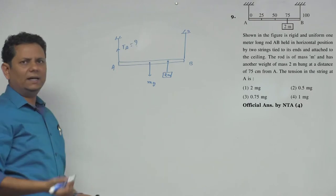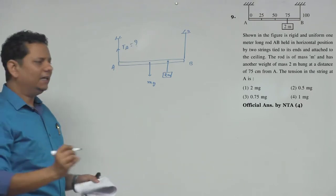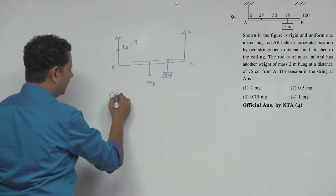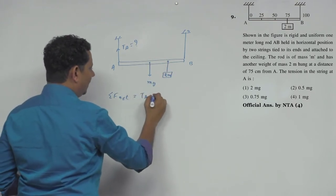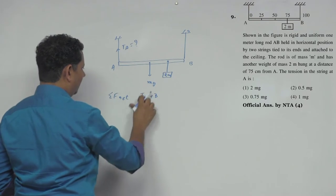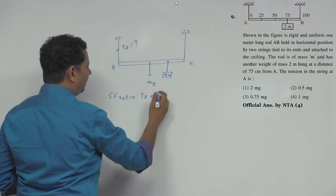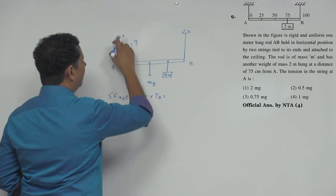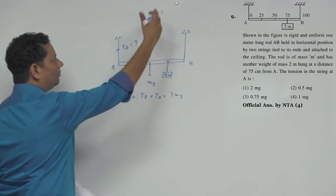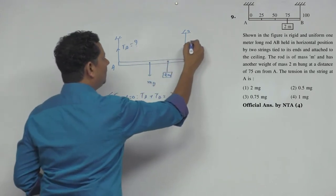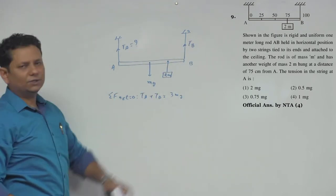We need to find the value of TA. It is a simple question. If we write F_net = 0, then TA + TB = 3Mg. Looking at the system, two forces TA and TB act upward, and the total downward force is 3Mg. So that gives us the first equation.